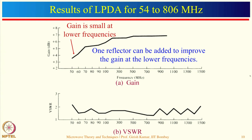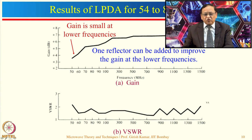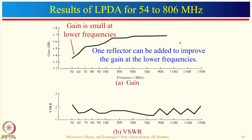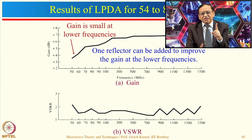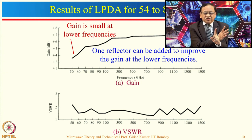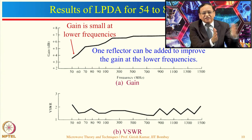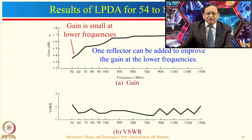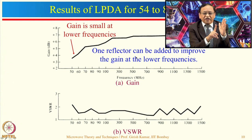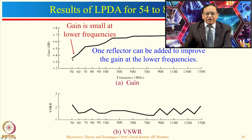The design result shows gain versus frequency and VSWR versus frequency. VSWR is less than 2 over the entire band. Gain is relatively small at the lower frequencies because nothing is reflecting from behind the longest dipole. Adding a reflector behind the longest dipole is recommended — this would raise and flatten the gain curve over the desired bandwidth.